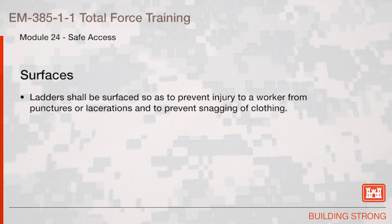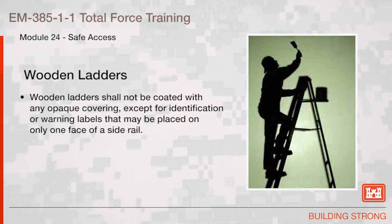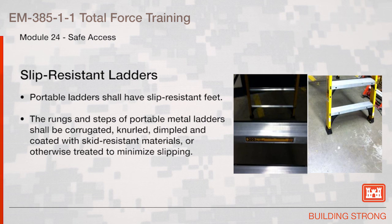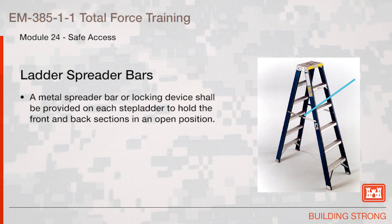Surfaces: Ladders shall be surfaced to prevent injury from punctures or lacerations and to prevent snagging of clothing. Wooden ladders shall not be coated with any opaque covering except for identification or warning labels placed only on one face of a side rail. Portable ladders shall have slip-resistant feet. The rungs and steps of portable metal ladders shall be corrugated, knurled, dimpled, coated with skid-resistant materials, or otherwise treated to minimize slipping. A metal spreader bar or locking device shall be provided on each stepladder to hold the front and back sections in an open position.